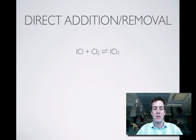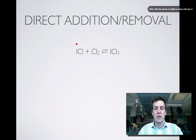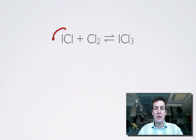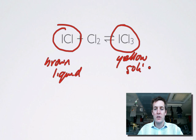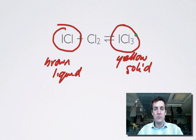Let's start by looking at this equilibrium system. ICl is a brown liquid which can react with chlorine to produce ICl₃, a yellow solid. This means we can visualise the position of equilibrium — whether there are more reactants or products — by observing whether there is lots of brown liquid or lots of yellow solid. When there was lots of chlorine present, there was lots of yellow solid, and when the chlorine was expelled, there was lots of brown liquid and not much yellow solid.